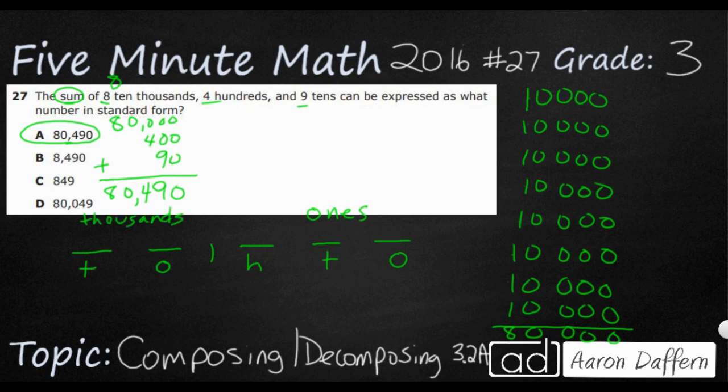And then this is our thousands period, or our thousands family. We could go up to a hundred thousand, but we don't need it because the largest digit is the eight in the ten thousands. The reason we know this is because if we know that we have one, ten, hundred, and then one thousand, ten thousand, hundred thousand, we can simply plug in these digits.